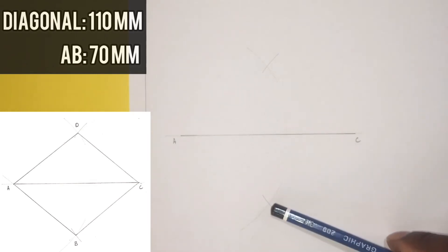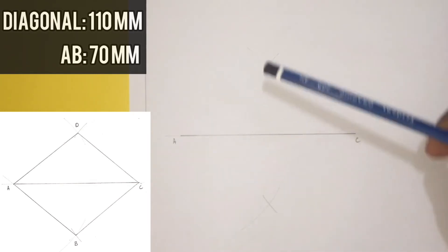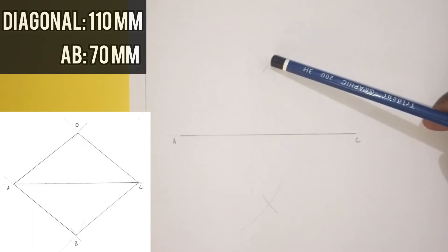These intersecting arcs will give me point B, and the upper one will give me point D.